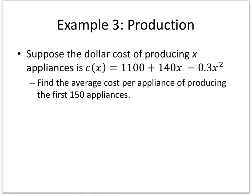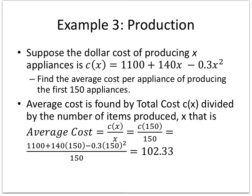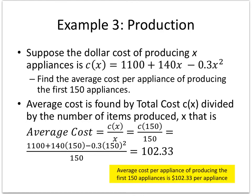Suppose the dollar cost of producing X appliances is given by this cost equation. Find the average cost per appliance of producing the first 150 appliances. How do you find an average? Total divided by the number. So average cost would be the total cost divided by 150. I simply plug 150 into the cost equation and divide by 150 — that gives me the average cost per appliance.